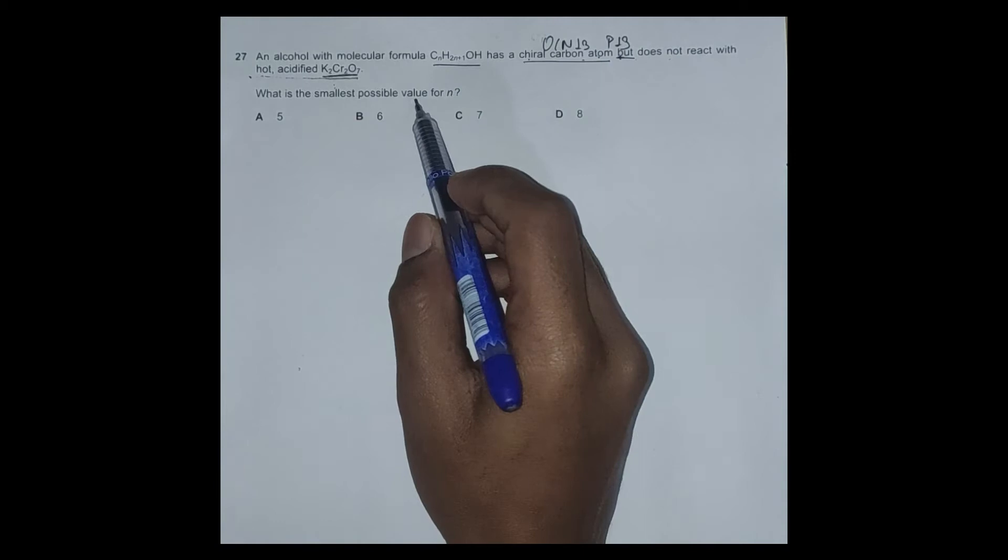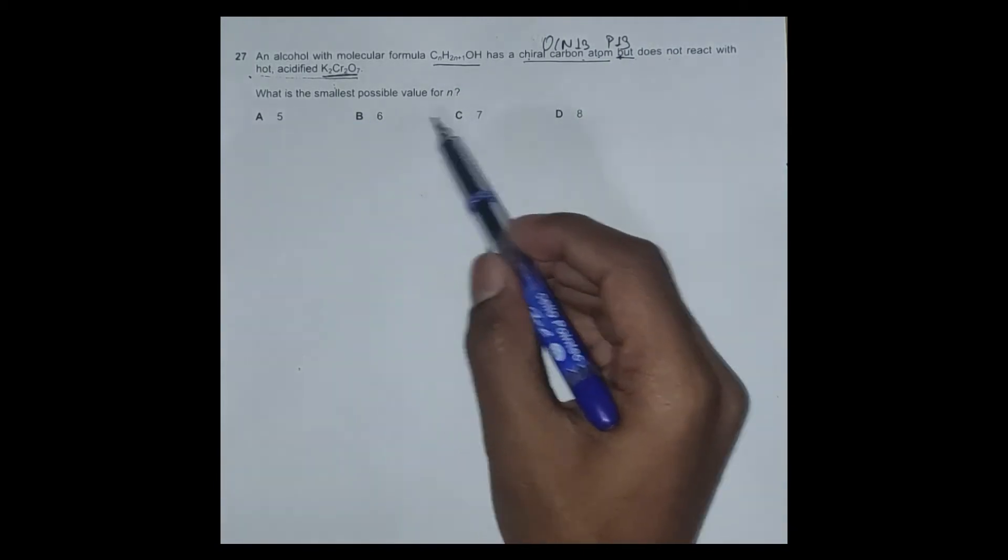So what is the smallest possible value for n? We have been given options: 5, 6, 7, and 8.